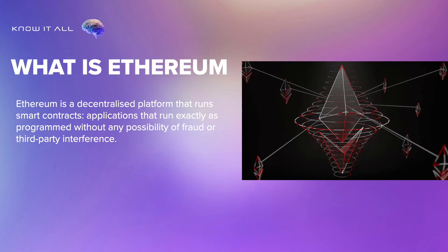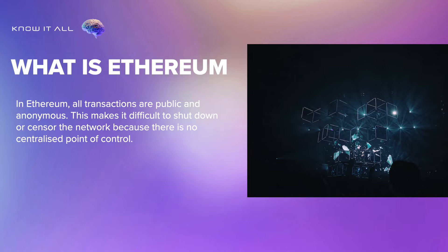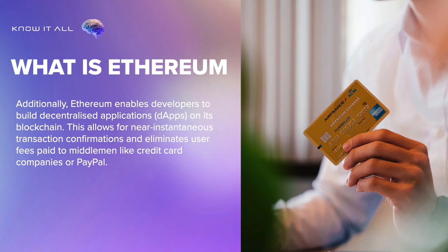What is Ethereum? Ethereum is a decentralized platform that runs smart contracts — applications that run exactly as programmed without any possibility of fraud or third-party interference. In Ethereum, all transactions are public and anonymous. This makes it difficult to shut down or censor the network because there is no centralized point of control.